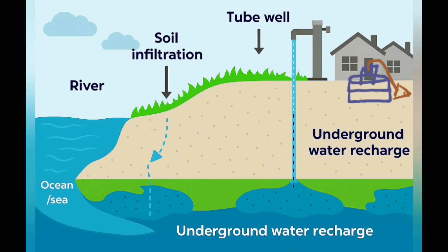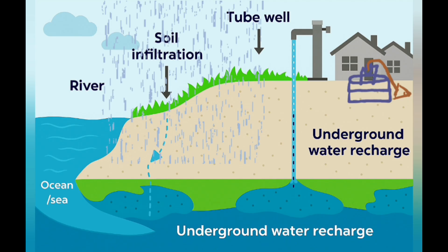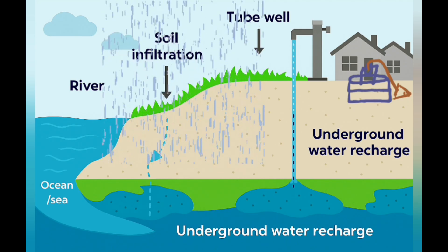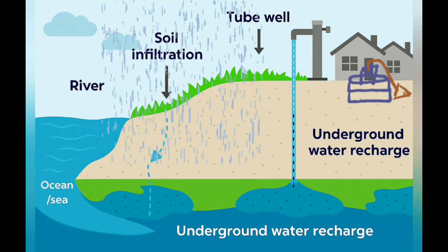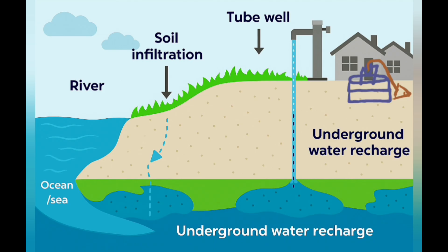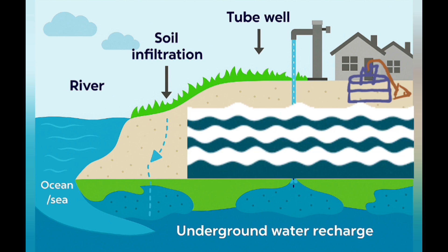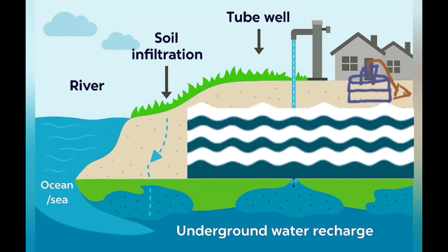Now, water use. Rainwater flows on the surface and also goes underground — some water gets into the soil to fill underground aquifers.